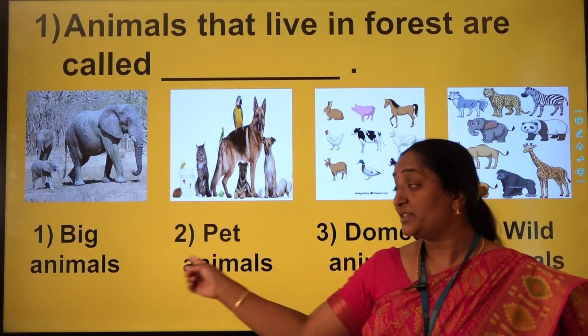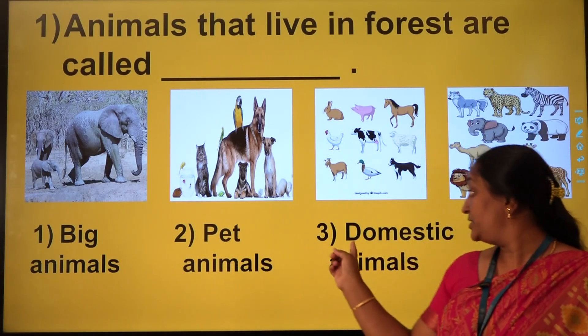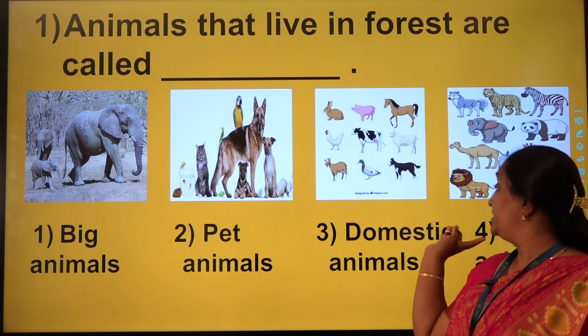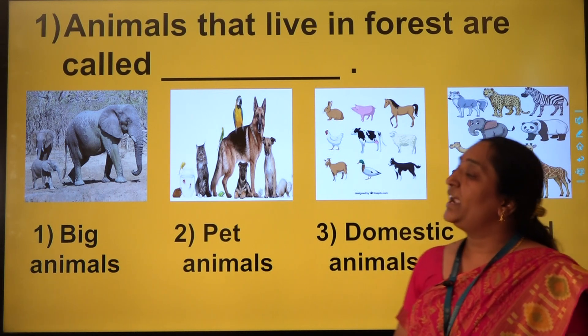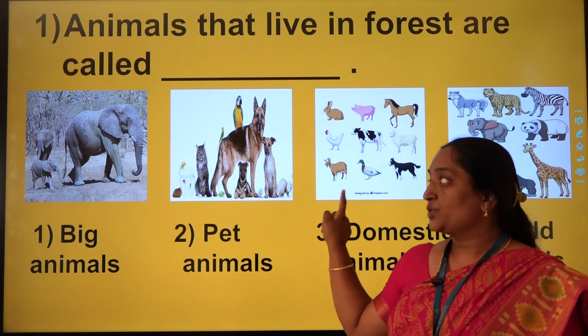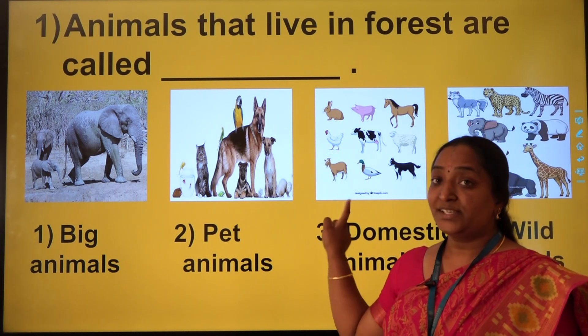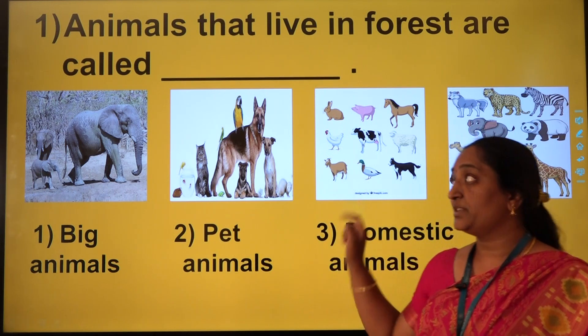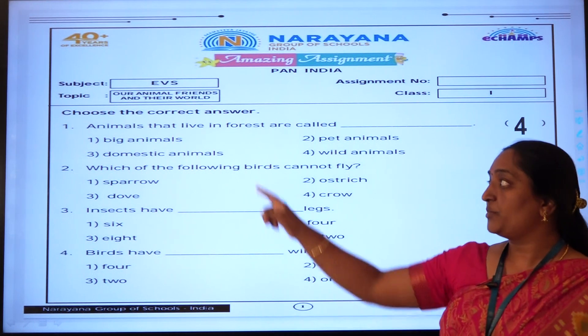So here we have big animals, pet animals, domestic animals, and wild animals. The answer is wild animals, that is option number 4.